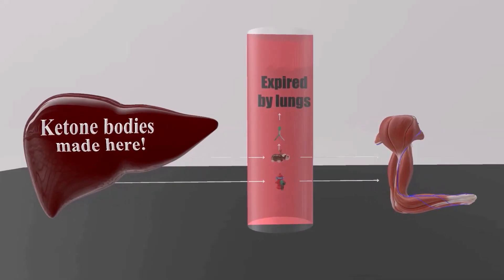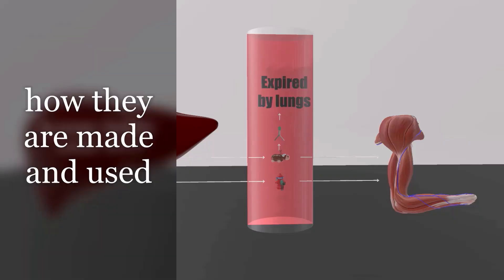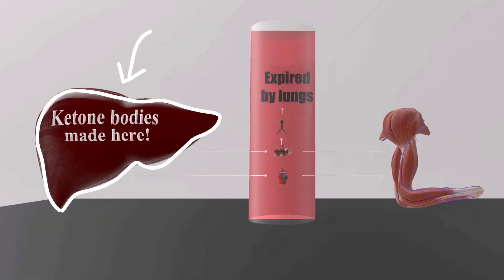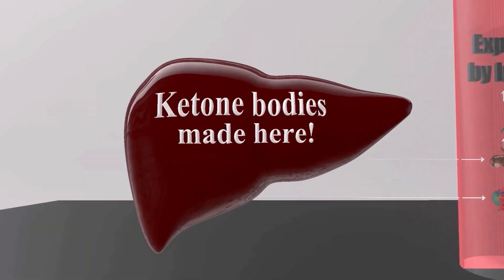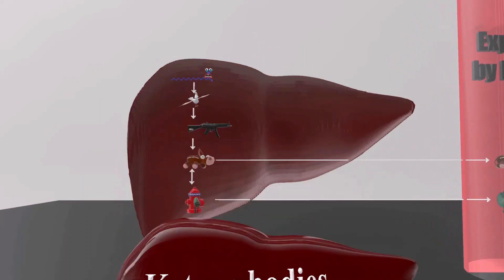In this scene we're going to have a ton of fun talking about ketone bodies. We're going to learn about how ketone bodies are made and how they are used. Let's take a look inside this liver over here to see how ketone bodies are produced.